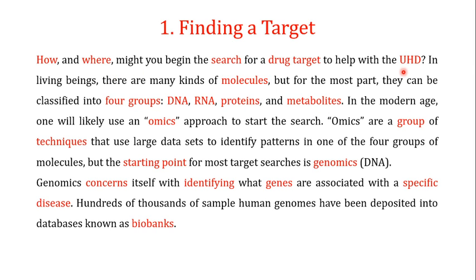How and where might you begin the search for a drug target? In living beings like humans, there are many kinds of molecules, but they can be classified into four groups: DNA, RNA — collectively known as nucleic acids — proteins, and metabolites. In modern approaches, you would use the omics approach, which uses large datasets to identify patterns in one of these four groups of molecules.